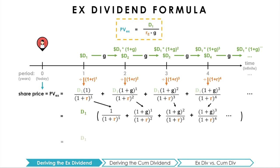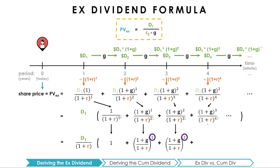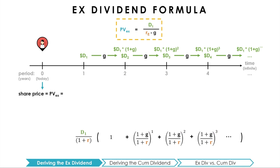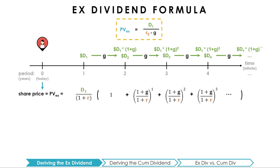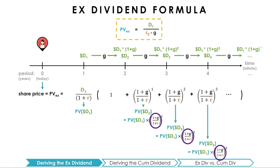Furthermore, we can factor out (1+R) from the sequence so that the exponents in the numerator and denominator of each term now match. From here, we have a pattern in the future expected dividends. What we have factored out is the present value of the first dividend, and in the brackets, we can see that the present value of each future dividend becomes increasingly larger by (1+G) divided by (1+R). In other words, the present value of the second dividend equals the present value of the first dividend times (1+G)/(1+R), and so on for infinitely many dividends.